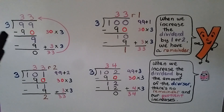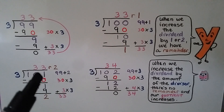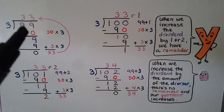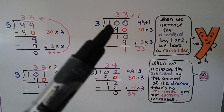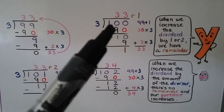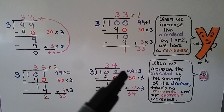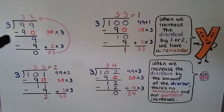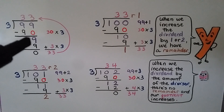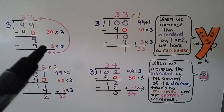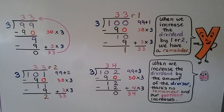Now we have four division problems: 99 divided by 3, 100 divided by 3, 101 divided by 3, and 102 divided by 3. We're going to see what happens when we start with 99 and increase the dividend by 1 each time. For 99 ÷ 3, we subtract 90 and get 9. Then 3 times 3 is 9, so we subtract that and get 0. Our partial quotients are 30 and 3, giving us a quotient of 33.